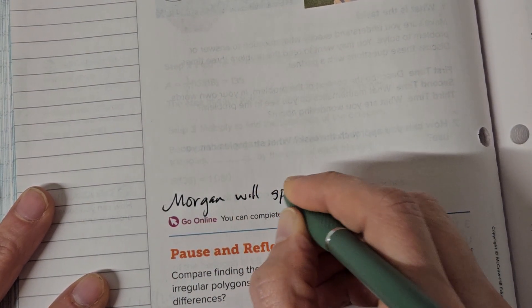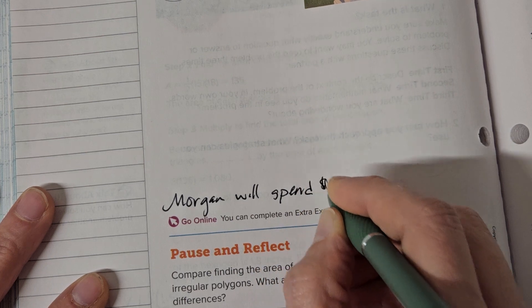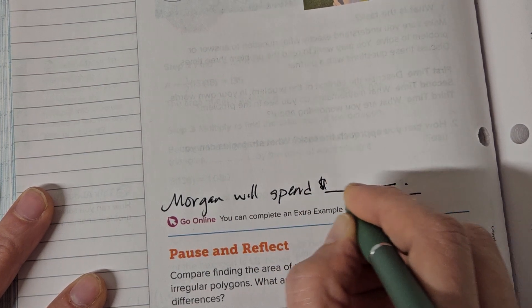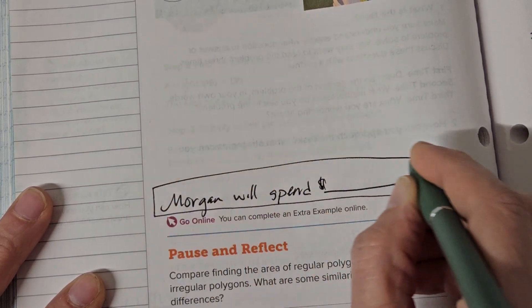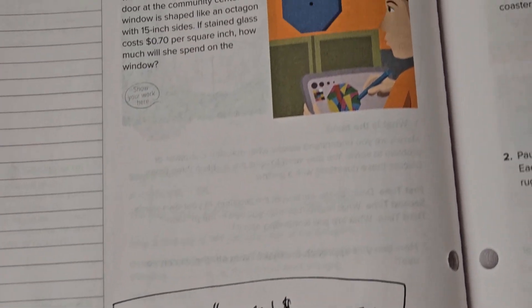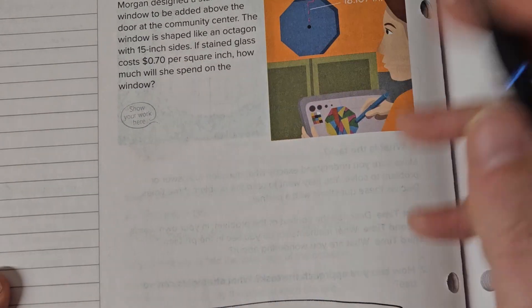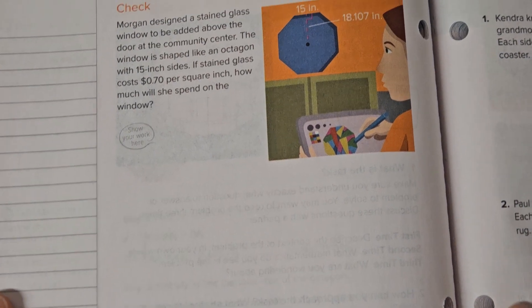And then we have a place to put our answer. So let's first figure out the area, and then we can times that by the price per square foot.